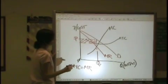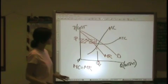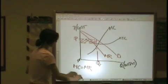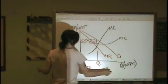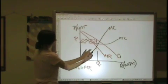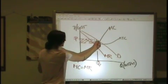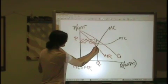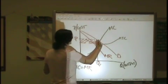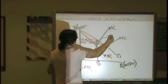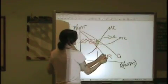Now, where's our dead weight loss? Our dead weight loss is this triangle — from this level of quantity up to that intersection. So all of this right here is dead weight loss.